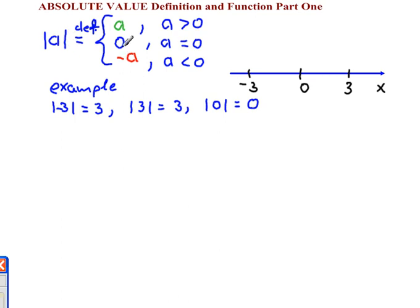Absolute value of a is equal to a when a is positive. Absolute value of a is equal to 0 when a is 0. And absolute value of a is equal to negative a when a is less than 0.